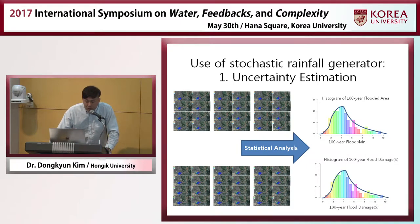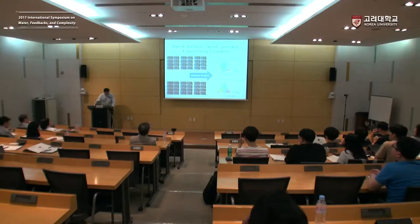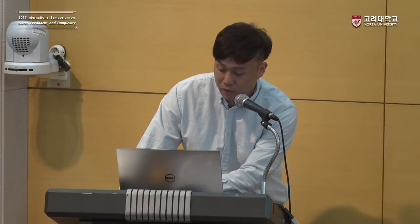If we perform statistical analysis, we can quantify the risk related to flooding. For example, we can determine the probability density or distribution of the 100-year flood plain, or the probability distribution of 100-year flood damage. This is a typical example in which the stochastic rainfall generator is used for uncertainty estimation.